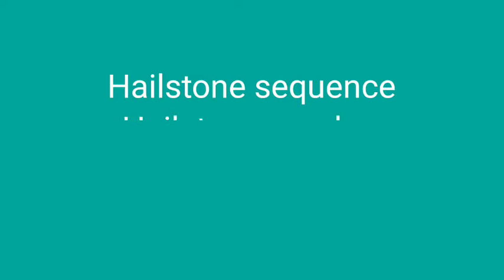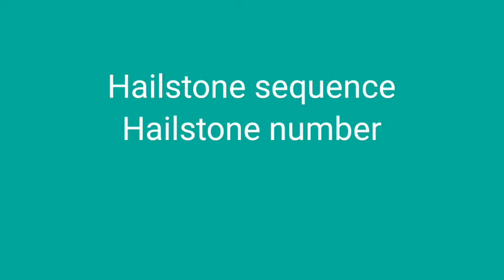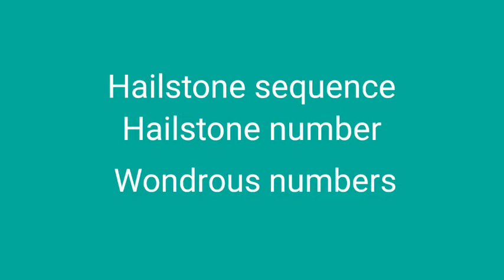The sequence of numbers involved is sometimes referred to as the hailstone sequence or hailstone numbers because the values are usually subject to multiple descents and ascents like hailstones in a cloud, or as wondrous numbers.